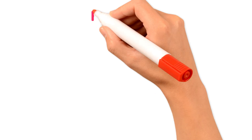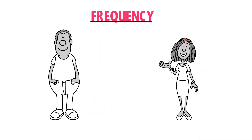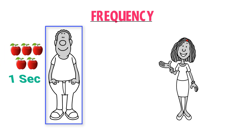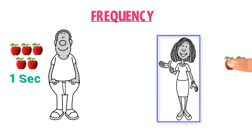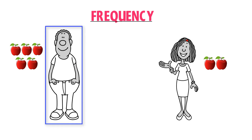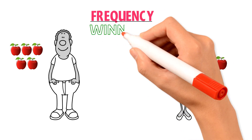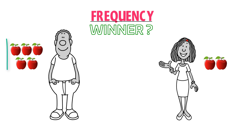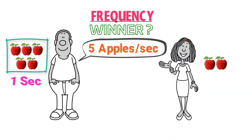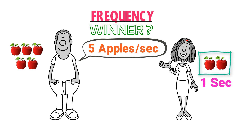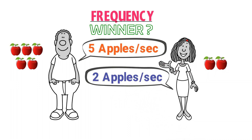First, let me teach you the concept of frequency. Let's consider John and Uzma. John can eat five apples in one second while Uzma can eat only two apples in one second. So John eats five apples per second while Uzma eats two apples per second.